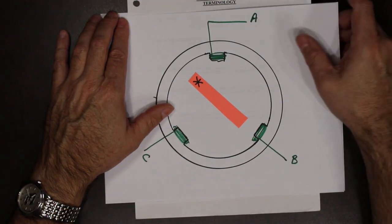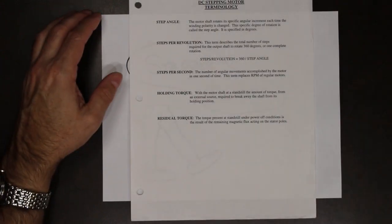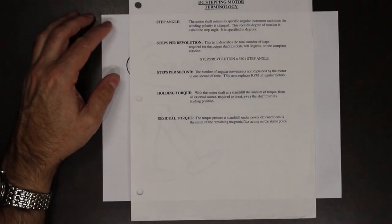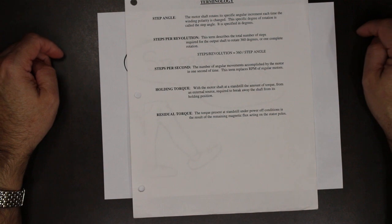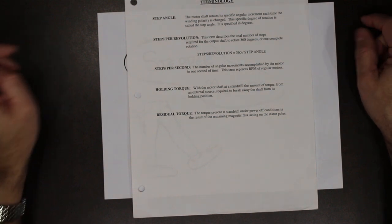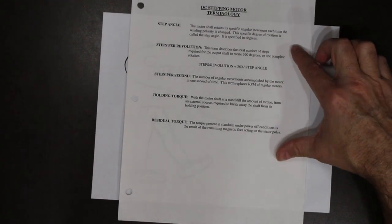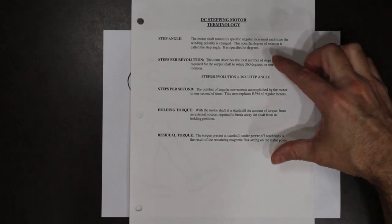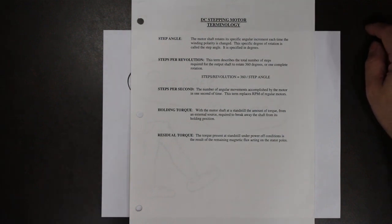So those are the five terms you need to be familiar with: step angle, steps per revolution, steps per second, holding torque, and residual torque. This set of terminology is in your class notes.